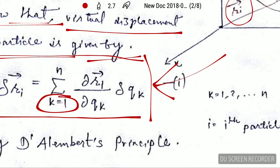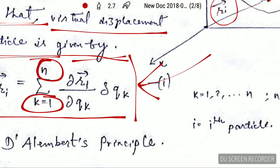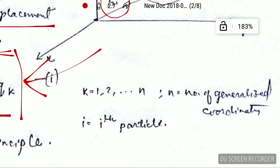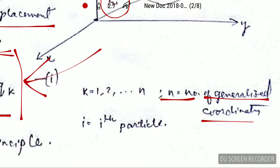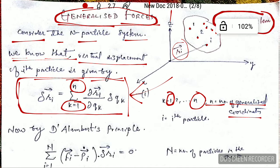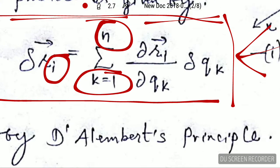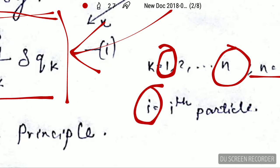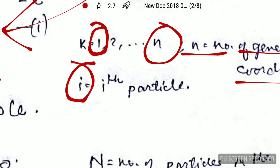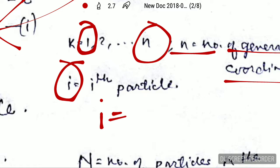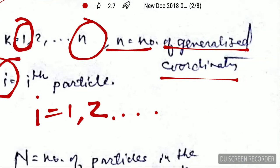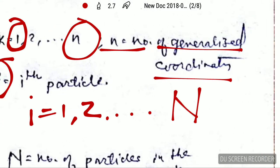In this expression, k runs from k equals 1 to k equals n, where n is the number of generalized coordinates. Here i stands for the ith particle, and i can go from 1 up to n, the total number of particles.